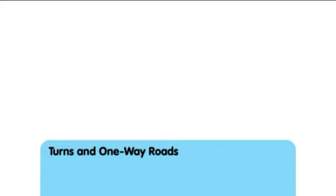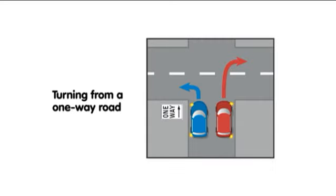If you are going to turn from a one-way road into a normal two-way road, you should start your turn from the side of the road closest to the direction you are turning. So, if you are going to turn left, start on the left side of the one-way road. Or, if you are turning right, start from the right side.